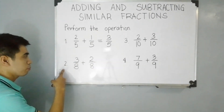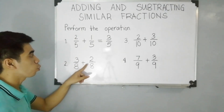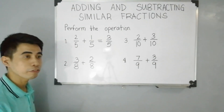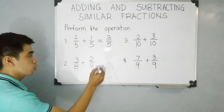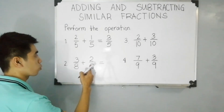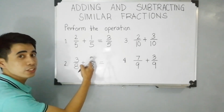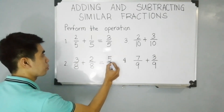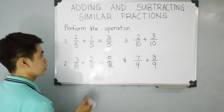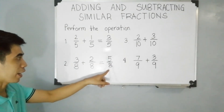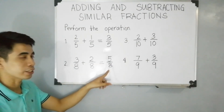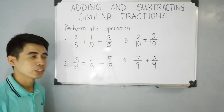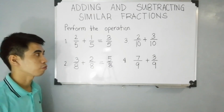For item number 2: 3 over 8 plus 2 over 8. As you can see, these fractions have the same denominators. So, we have to add the numerator. 3 plus 2 is 5. And then copy the denominator of 8. 5 and 8 do not have any common factor aside from 1. That's why 5 over 8 is your final answer — it is in simplest form.